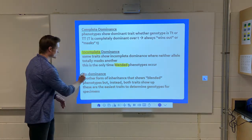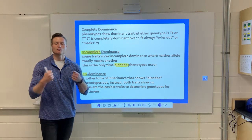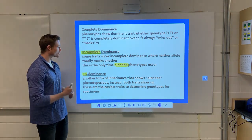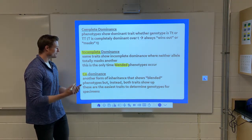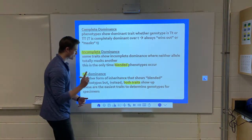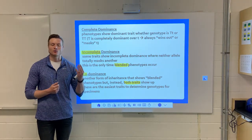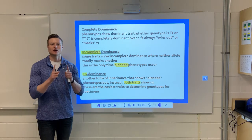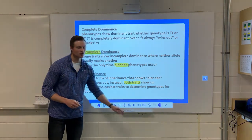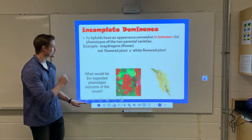Co-dominance means that the alleles are cooperating — they are both equals, so both traits show up. For example, if we had a red flower and a white flower crossed together, we would have a red and white flower — a mixture of the two showing both red and white. Let's get into a couple of examples of each.